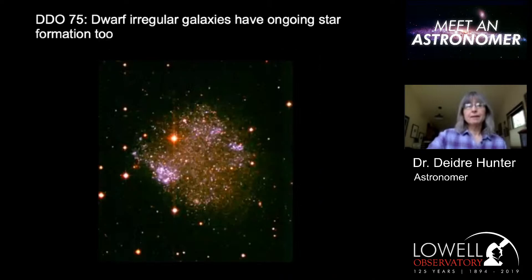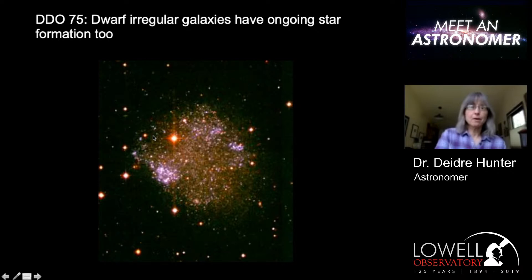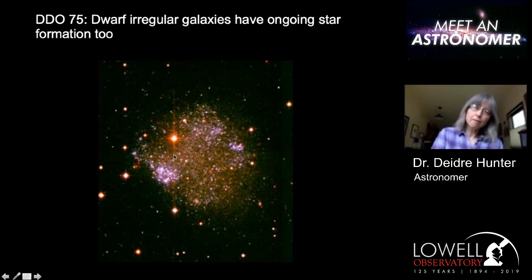And then there are the little tiny dwarf galaxies, which is what I study. This star and these other stars around the galaxy are foreground stars in the Milky Way — they're just in the way. But this galaxy is close enough that you can begin to resolve it into individual stars. You can see that mottled appearance.